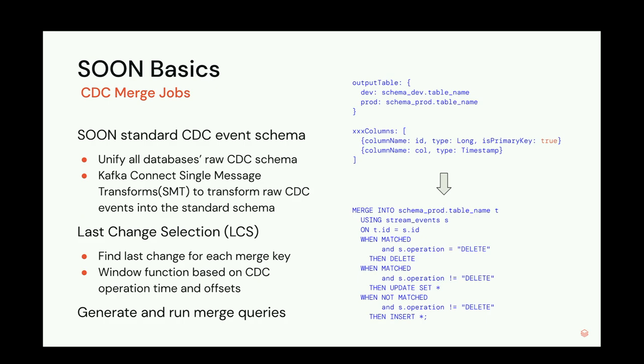The Swoom standard CDC event schema was designed to unify the raw CDC schemas from all databases into one. We heavily rely on different open-source Kafka source connectors, and the CDC schemas sent out by those connectors vary greatly. Rather than implementing many readers for different schemas inside Swoom, we use a Kafka Connect feature called SMT (Simple Message Transform) to transform different raw CDC schemas into this standard schema.